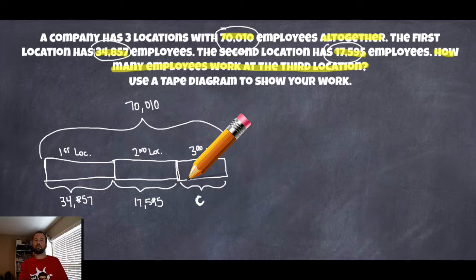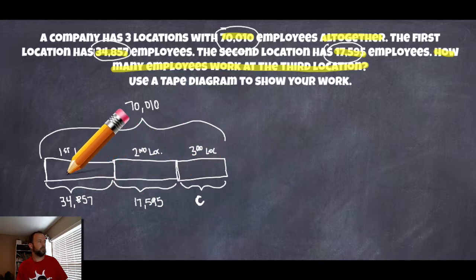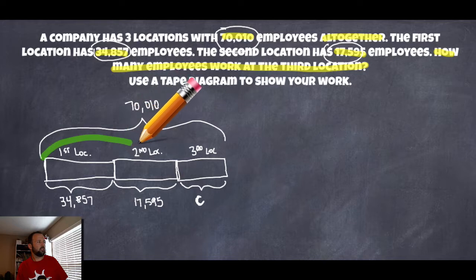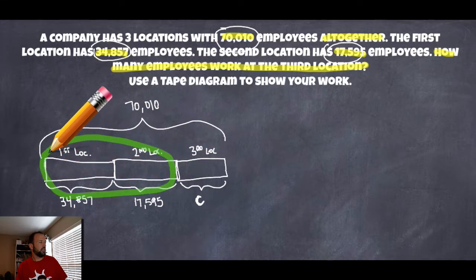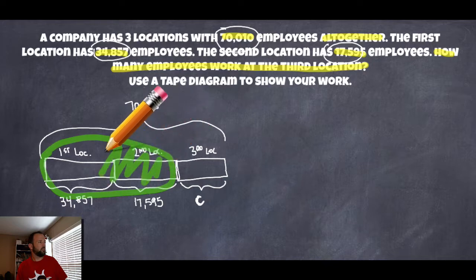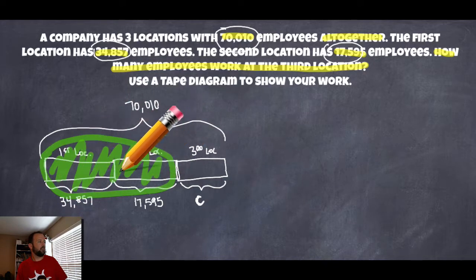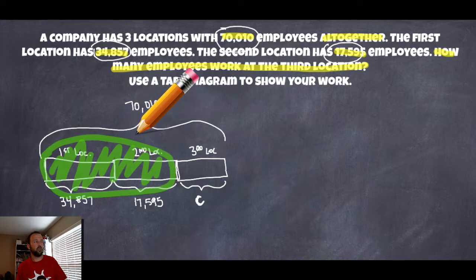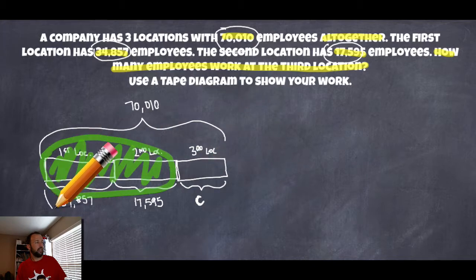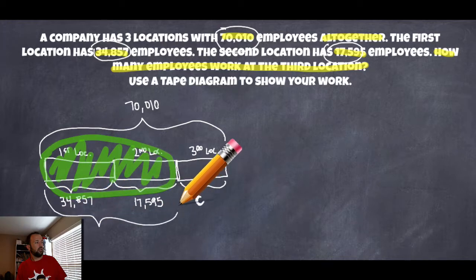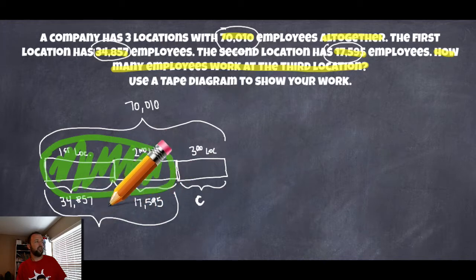Based on this, how could we problem solve? What could we do to find out what location C is? Here's what I would do: I would take the first location and the second location and add them up to figure out what those two pieces are together. And if I figured that out, then I could subtract that from the total to figure out what this third piece is. So my first step is to add up 34,857 and 17,595.